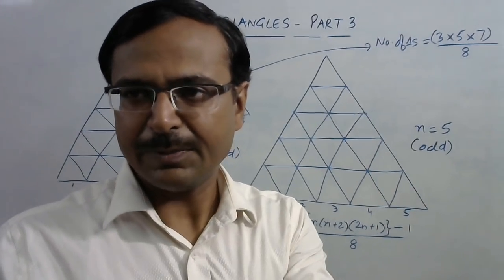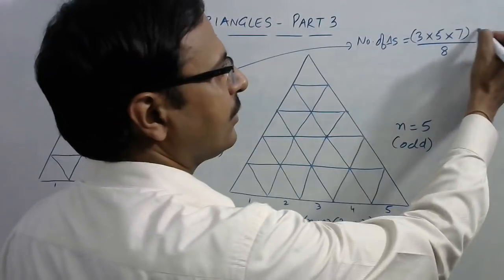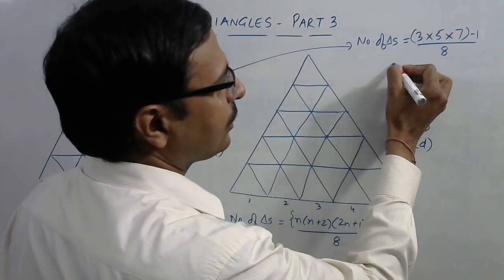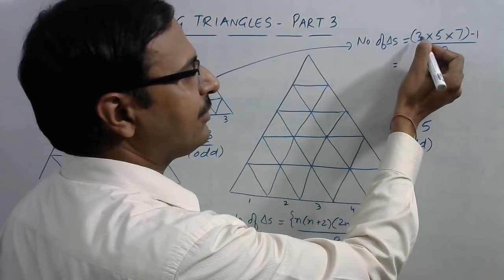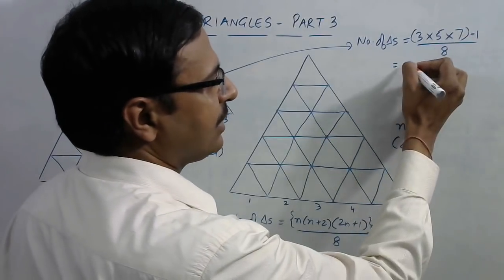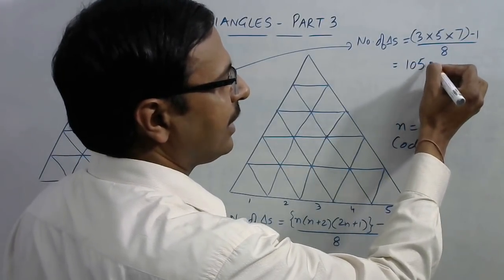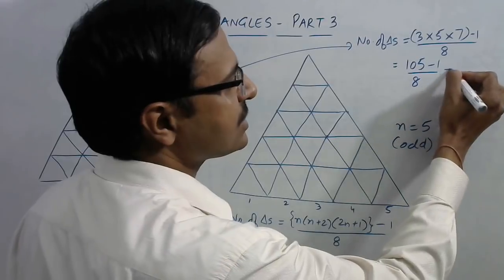We will calculate this very easily. Now I think it's not visible, so let me just make some space here. We have minus one, and now five into three is fifteen, fifteen into seven is one zero five, and minus one.